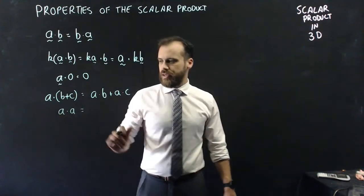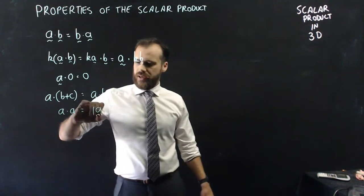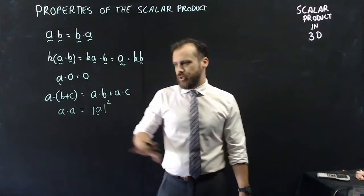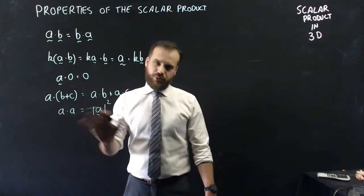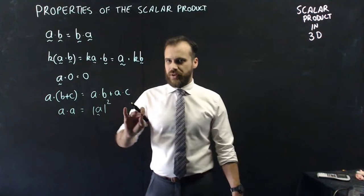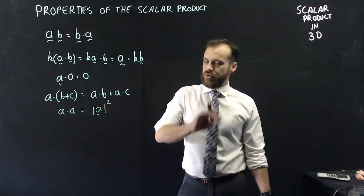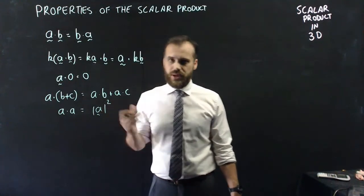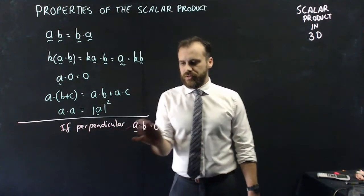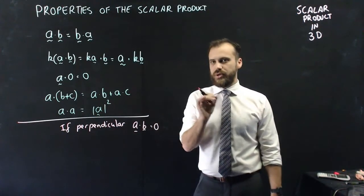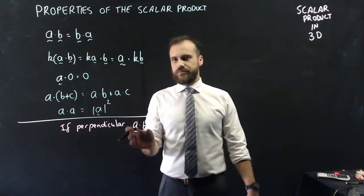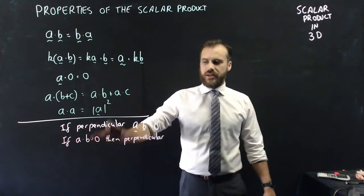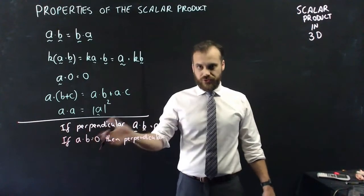A dot A equals the magnitude of A squared. From the geometric interpretation: it would be magnitude A times magnitude A times cosine zero, and cosine of zero is one, so you get magnitude squared. Importantly, if two vectors are perpendicular, the dot product equals zero — and the converse holds too: if A dot B equals zero, then they are perpendicular. This is very useful for geometric proofs when you need to prove two things are perpendicular.